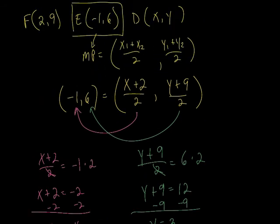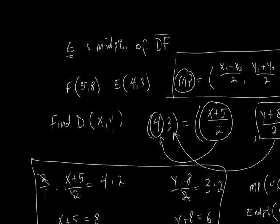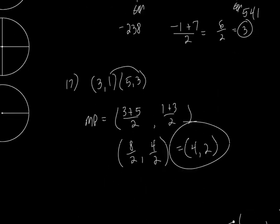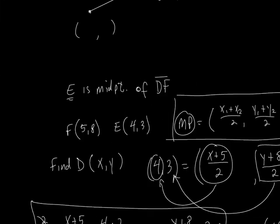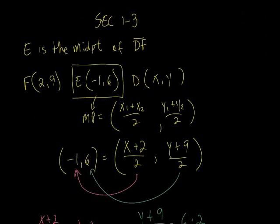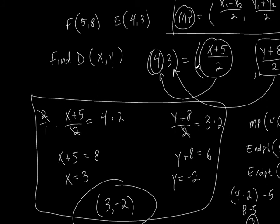A student asks about an earlier example. The teacher clarifies: it's this one right here — the first one we did today, which wasn't recorded but was done earlier. The coordinates are (4, 3). So you take the midpoint, multiply by 2 — which gives 8 — then take away the other endpoint. Two times 4, then take away 5. And for the Y: two times 3, take away 8. That's exactly what we did.